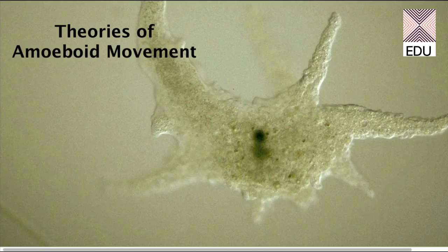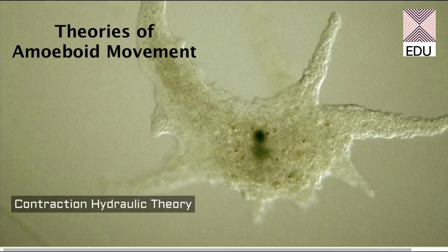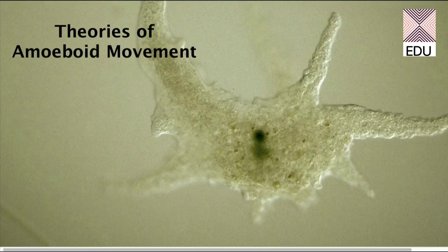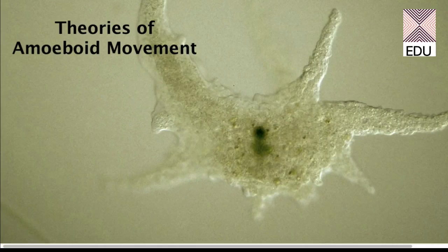We are now discussing the theories of amoeboid movement. Various scientists have given their own theories. The very first theory is the contraction hydraulic theory, given in 1875, which states that amoeba undergoes contraction at the posterior end, causing protoplasmic currents to flow forward, pushing the amoeba forward and causing movement.